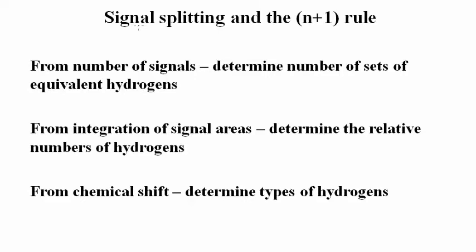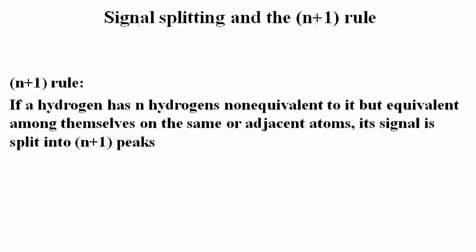Now, a fourth kind of information can be derived from the splitting pattern of each signal. In many situations, the degree of signal splitting can be predicted on the basis of the N plus 1 rule. According to this rule, if a hydrogen has N hydrogens non-equivalent to it, but equivalent among themselves, on the same or adjacent atoms, its proton NMR signal is split into N plus 1 peaks.